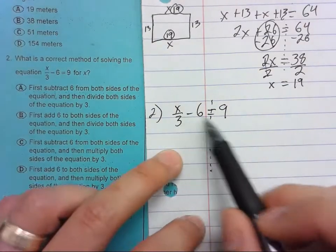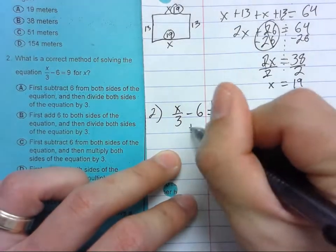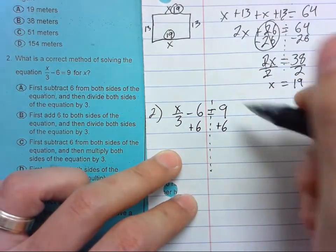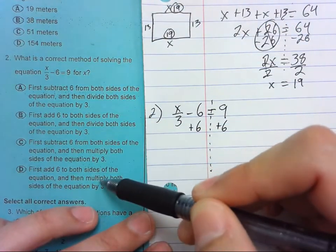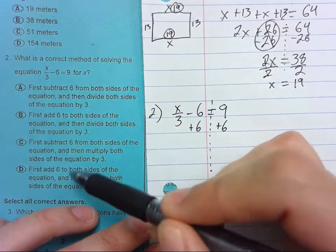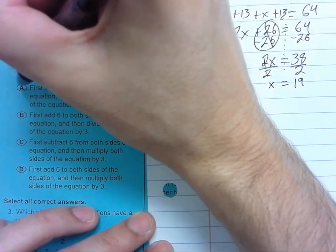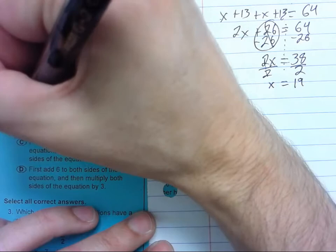So the first thing we would do here is add 6 to both sides. So which here tell us to add 6 to both sides? Just B and D so we can get rid of A and C.